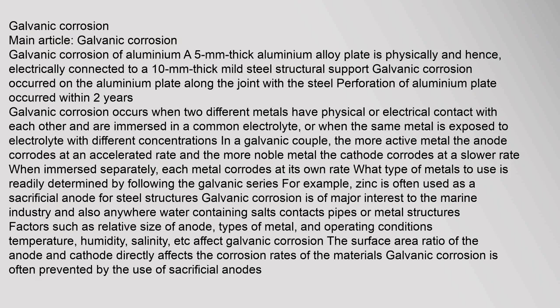Galvanic corrosion — main article. A 5 mm thick aluminium alloy plate physically and electrically connected to a 10 mm thick mild steel structural support experienced galvanic corrosion along the joint with the steel; perforation of the aluminium plate occurred within two years. Galvanic corrosion occurs when two different metals have physical or electrical contact with each other and are immersed in a common electrolyte, or when the same metal is exposed to electrolyte with different concentrations.